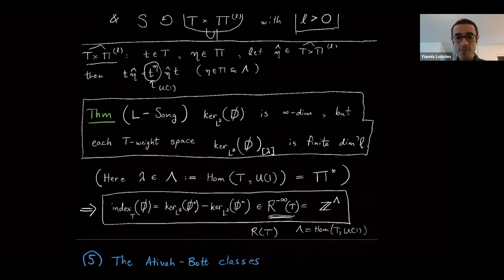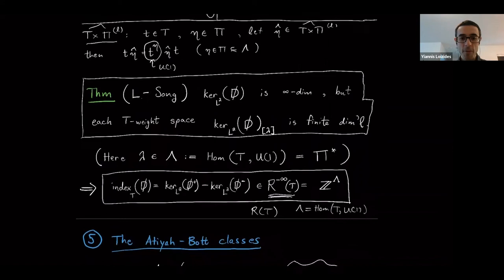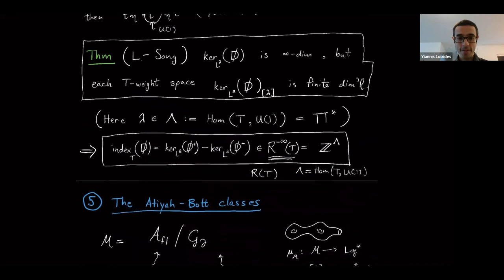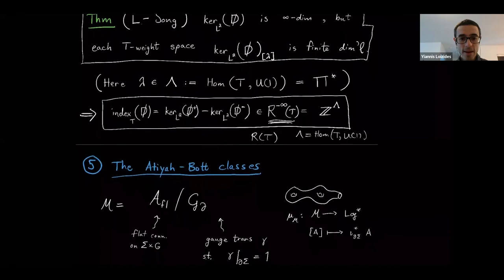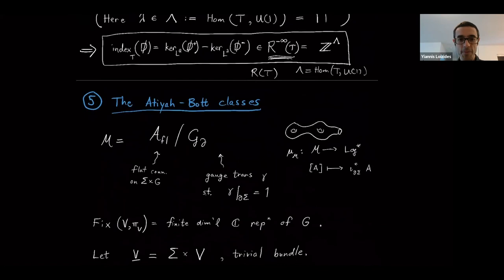The next thing I want to talk about is what are these K-theory classes that we're interested in. I'm going to go back to the moduli space examples and tell you about the Atiyah-Bott classes, which are really the classes we're interested in. To remind you: this loop group space is a quotient of flat connections by a subgroup of the gauge group.